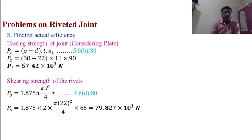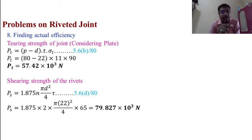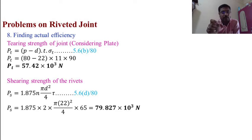Eighth, finding the actual efficiency. We need to calculate tearing strength, shearing strength, and crushing strength. Tearing strength: PT = (P − d) × t × σt — equation 5.6B, page 80. PT = (80 − 22) × 11 × 90 = 57.42 × 10³ N.